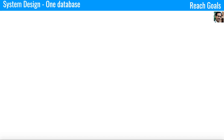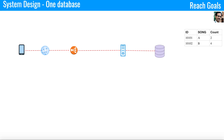So this first system design uses one database. It is very simple and easy to understand, but we can't meet our non-functional requirements. You have a UI which connects to the internet and to the load balancer. The load balancer connects to web services deployed on the application server, and the services are connected to a database like MySQL or Oracle. You will have a database table something like what I'm showing on the right side of the screen, which can be fine-tuned and normalized to meet our goals.